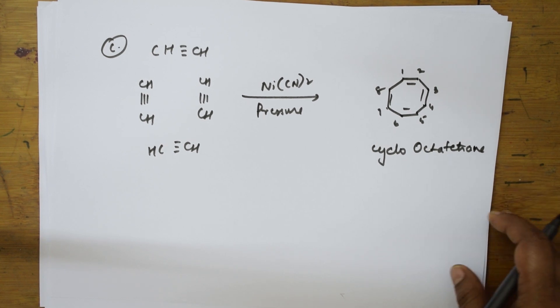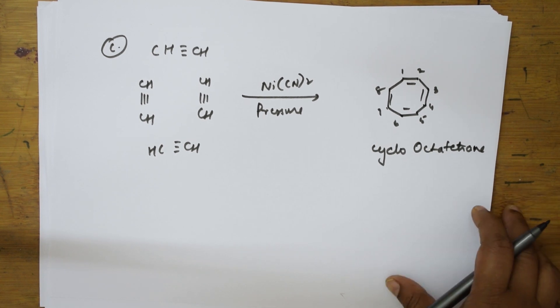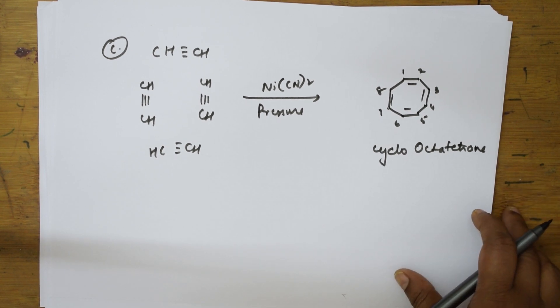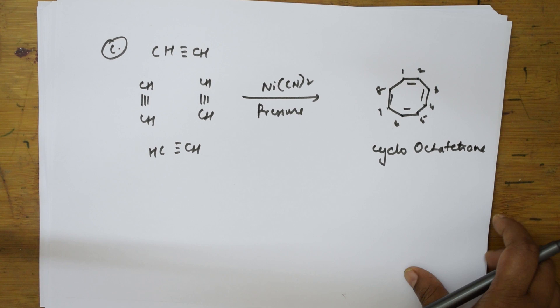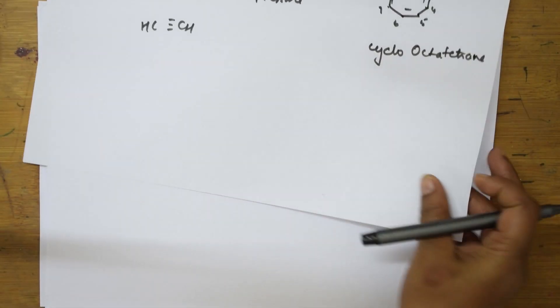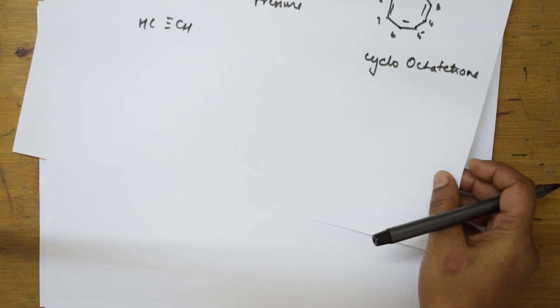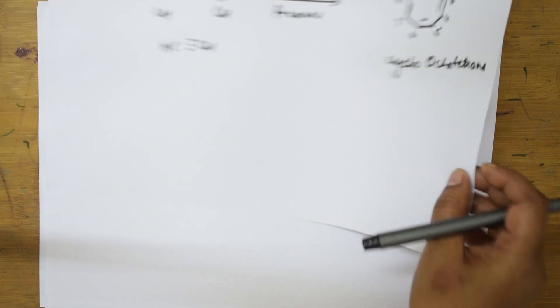These are the polymerization reactions of alkynes. Students, one basic thing: in your NCERT textbook there is only one part which is shown, so please practice this.